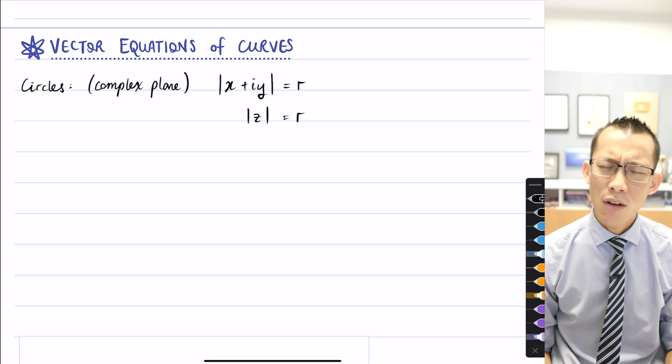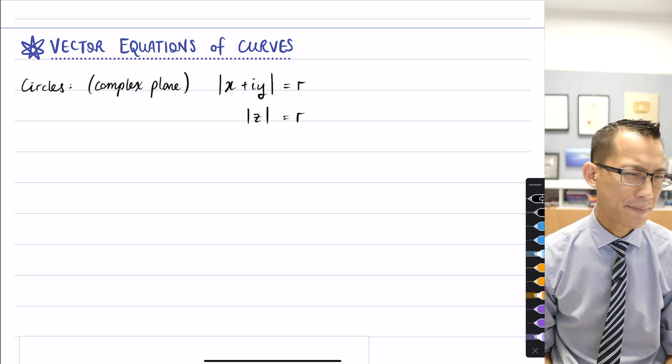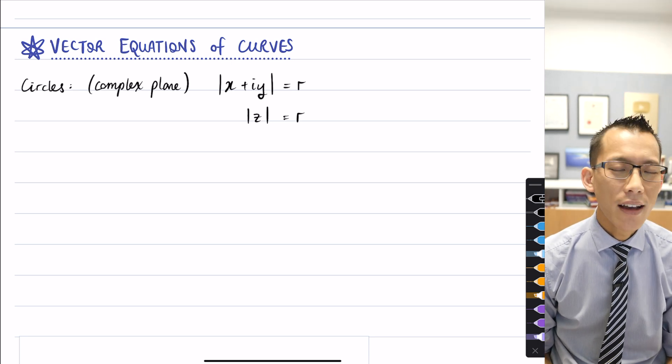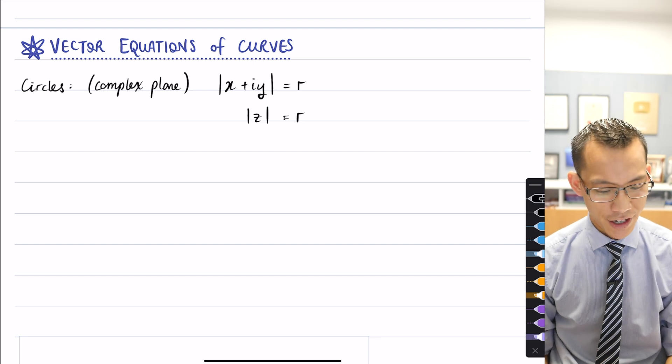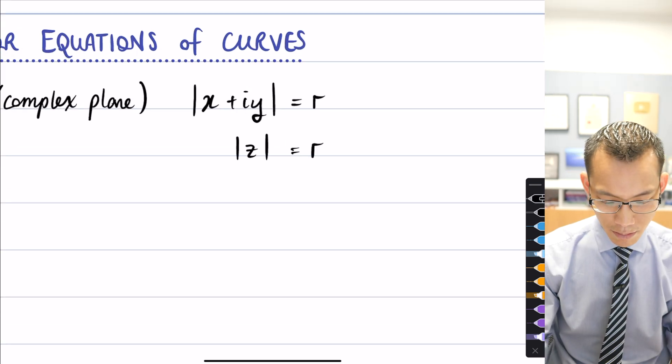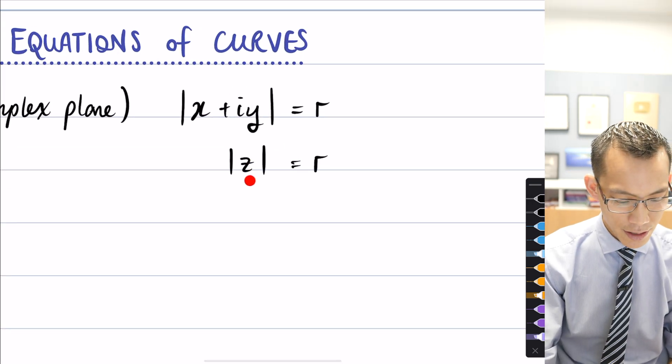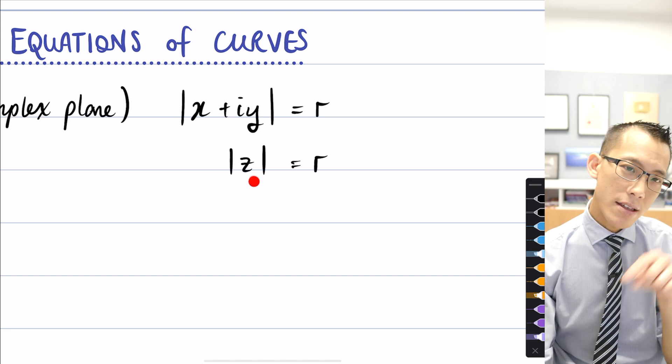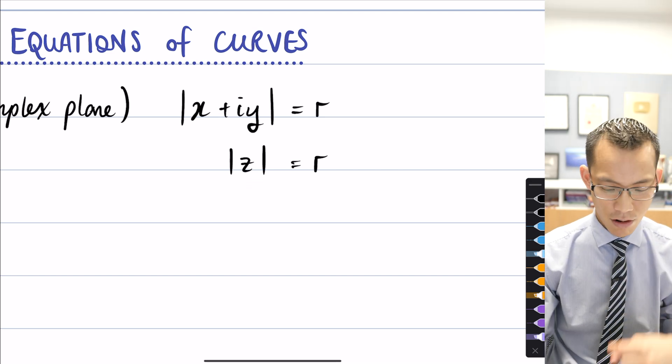Now what this would give you is a circle on the complex plane, its radius would be r. Where would its origin be by the way? Yeah, that's right, it would be at the origin because that's what modulus means. This literally means what is your distance from 0,0.